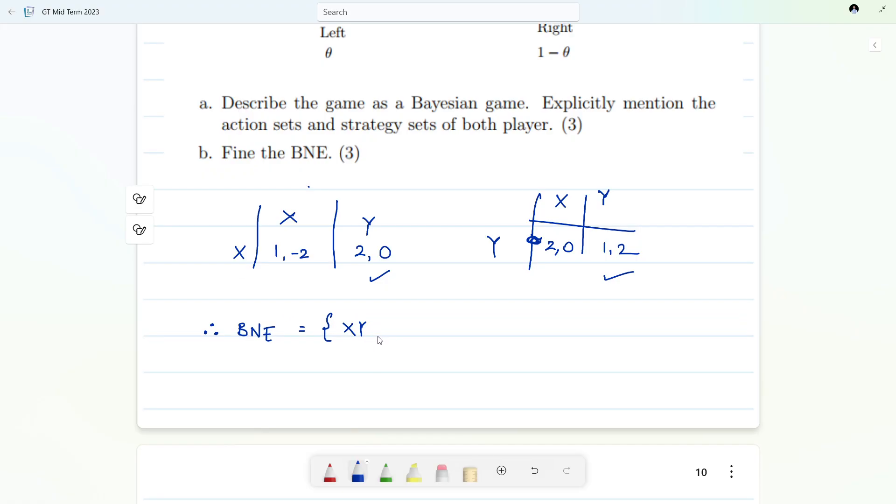Therefore the Bayesian Nash equilibrium for this game will be: X when he is of left type he will play X, when he is of right type he will play Y, and player two will always choose Y, whenever theta belongs to zero to one. That's all, it was a simple game.